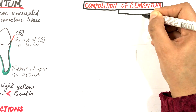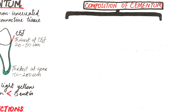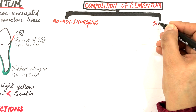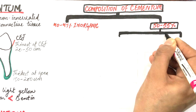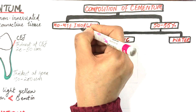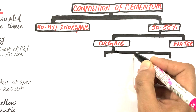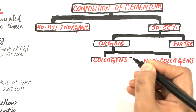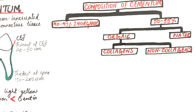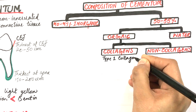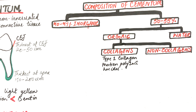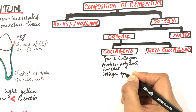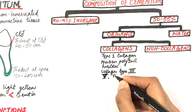Looking at the composition of cementum, about 45 to 50 percent is made up of inorganic material, and about 50 to 55 percent is made up of organic material and water. The organic part consists of collagenous and non-collagenous proteins. The collagenous proteins are mainly type 1 collagen and protein polysaccharides. Other types of collagenous proteins present are type 3, 5, 6, and finally collagen type 12.